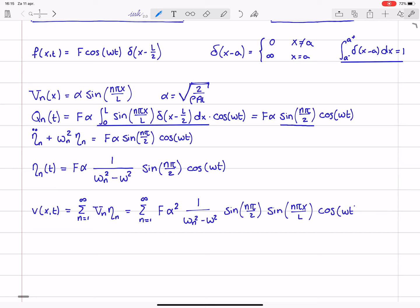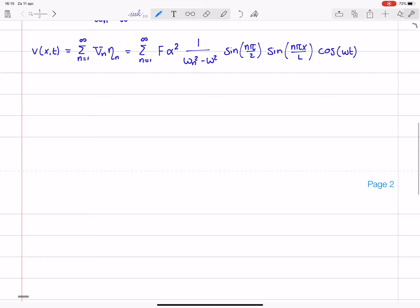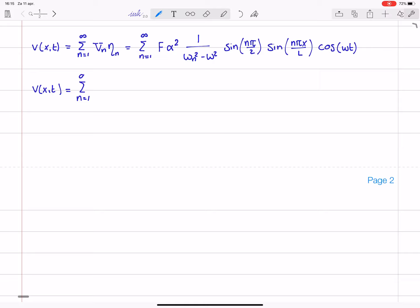omega t, okay, and if I now substitute the solution for alpha in here because alpha squared is known due to the mass normalization we get that the total solution is the infinite sum of 2f divided by rho a L and then we have omega n squared minus omega squared, 1 then we have sine n pi over 2